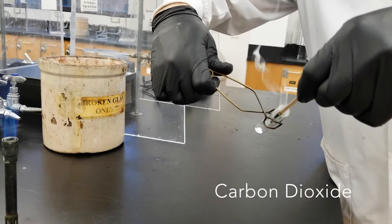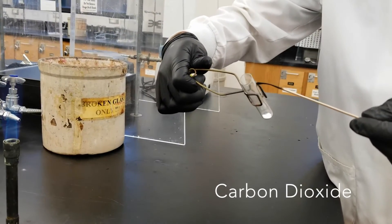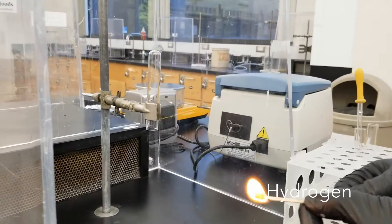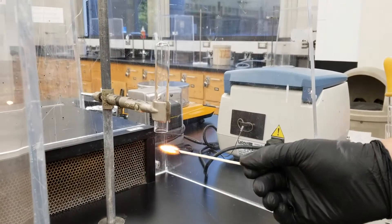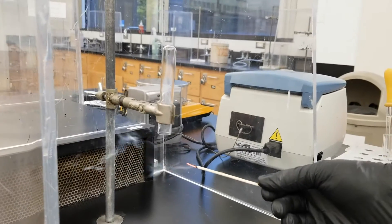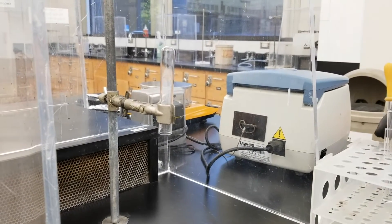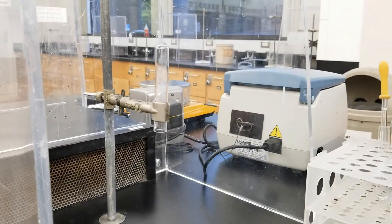A burning splint's flame will go out when exposed to carbon dioxide because it does not support combustion. A burning splint will cause a small explosion when exposed to hydrogen because hydrogen burns rapidly. Don't worry, in this lab it's a very small explosion and it will make a popping sound.